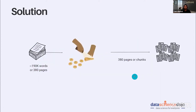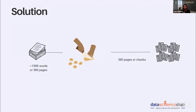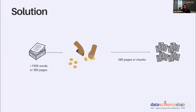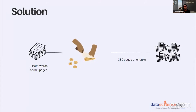If you want to ask questions from a book with 380 pages, you cannot put all 380 pages directly into a large language model. What orchestration frameworks do is chunk your dataset into separate pages and store them in a vector database. Whenever you ask a question, it does a semantic search, gets the relevant context from the database, and feeds that context plus the query into the model.